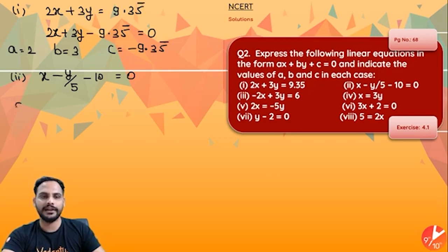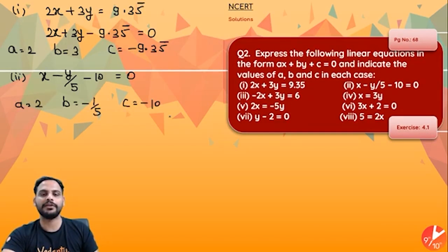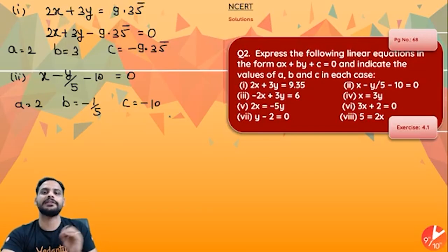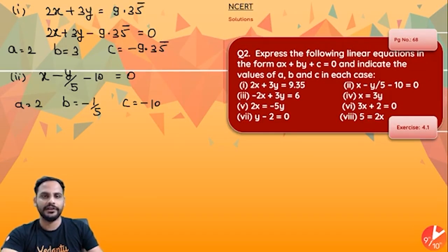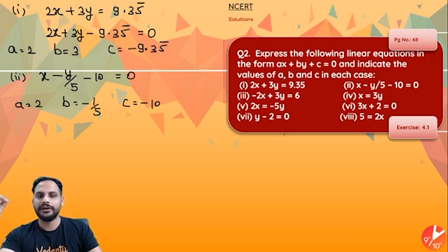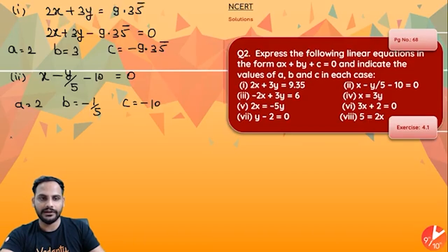The second equation is x − y/5 − 10 = 0. This is already in the general form, so a = 1, b = −1/5, and c = −10. Remember, the coefficient is the number multiplied with the variable. Here y is divided by 5, so you can write it as y multiplied by −1/5. The negative sign is also considered part of the coefficient.